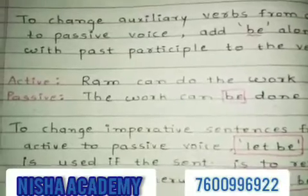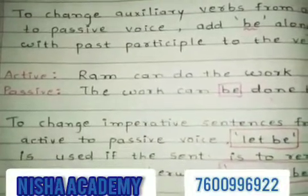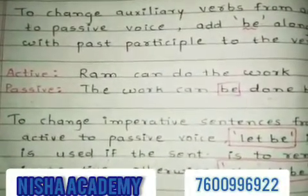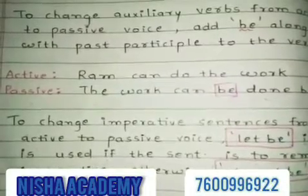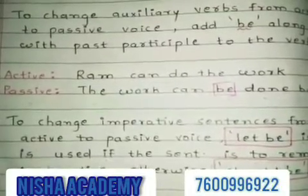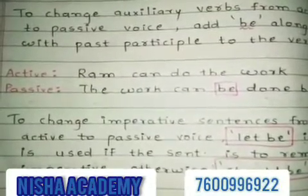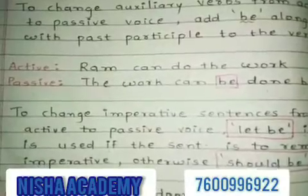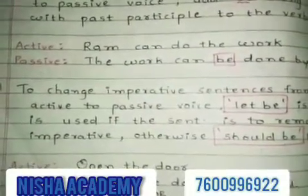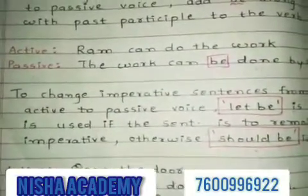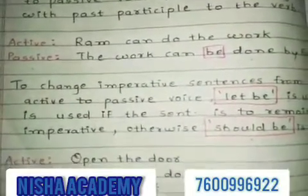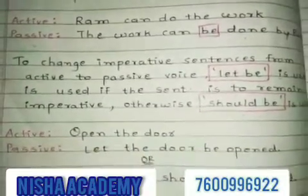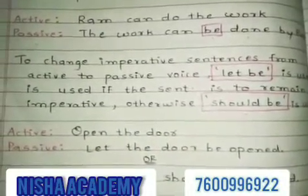Fourth, to change imperative sentences from active to passive voice, 'let be' is used if the sentence is to remain imperative; otherwise 'should be' is used. For example: 'Open the door.' In passive: 'Let the door be opened,' or 'The door should be opened.'